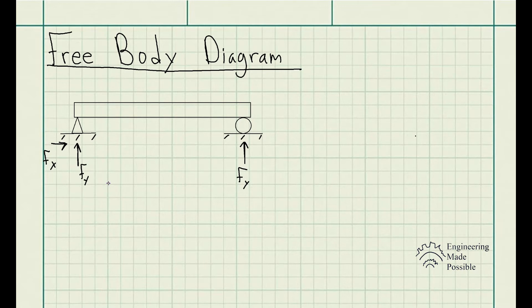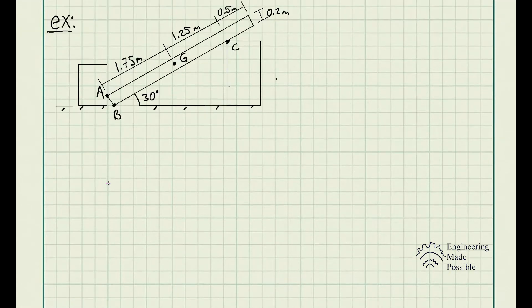Let's do some example problems to further solidify the concept of drawing a free body diagram, which is nothing more than drawing the object we're analyzing and the external forces applied to it, without drawing the surrounding supports or structures. The problem statement for this example: draw the free body diagram of the uniform bar, which has a mass of 100 kg and a center of mass at point G. The supports A, B, and C are smooth.